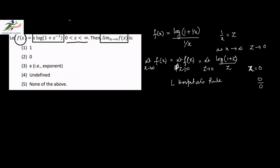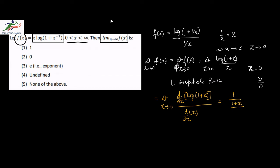Using L'Hôpital's rule, we take the differential of the numerator and the denominator with respect to z. So this would be: limit z tending to 0 of d/dz of log(1 + z) over d/dz of z, which is equal to 1/(1 + z) over 1. So this is equal to limit z tending to 0 of 1/(1 + z), which is equal to 1. So option 1 is the correct choice.